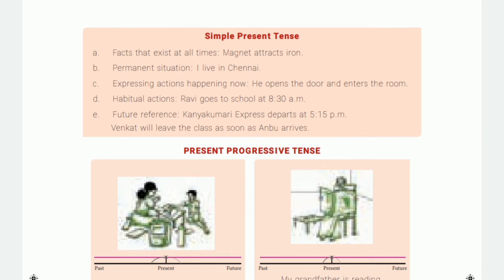Now, when and where do we use simple present tense? In your Samacheer book page 123, these points are given. First, facts that exist at all times — universal truths. Second, permanent situations that won't change. Third, expressing actions happening now. Fourth, habitual actions. Fifth, future reference such as timetables and program schedules.